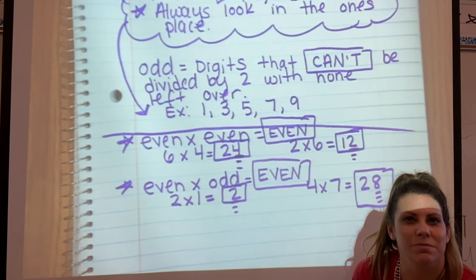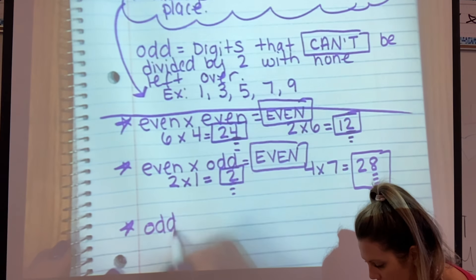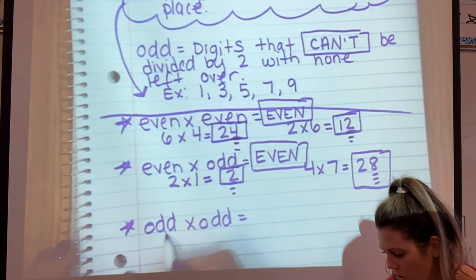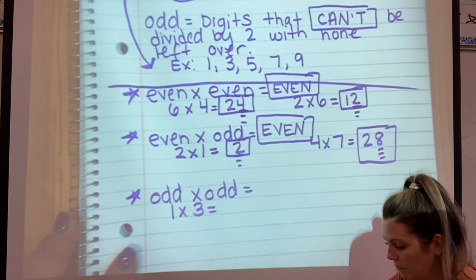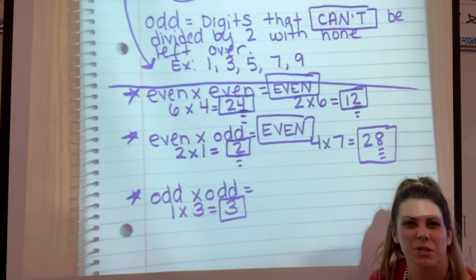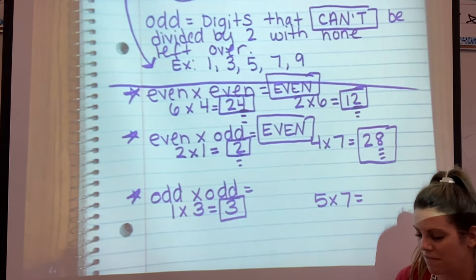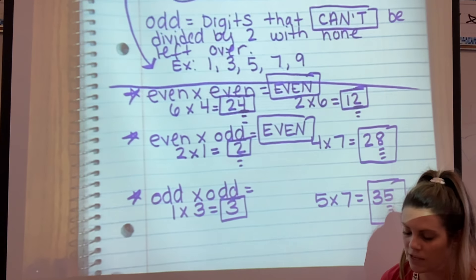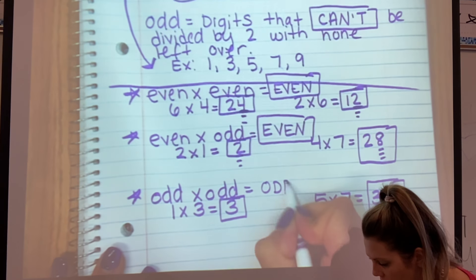What about odd times odd? What do you think the pattern is going to be? Let's do an example: one times three. One times three equals three, and we know three is odd. We always want to try two examples. Let's do five times seven. Five times seven equals 35. Looking in the ones place — is five even or odd? It's odd. So odd times odd equals odd.